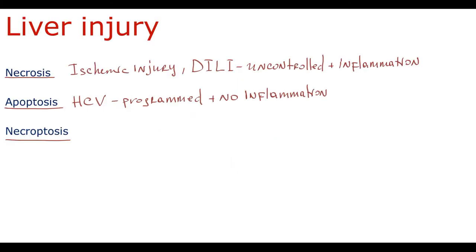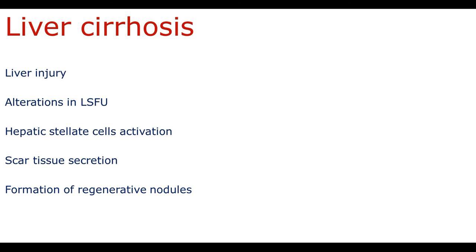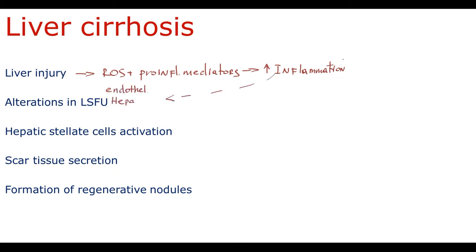Necroptosis is a relatively new term — basically it's a combination of necrosis and apoptosis. The similar feature with apoptosis is that it's a programmed process of cellular death. But unlike apoptosis, this process results in rupture of the plasma membrane with subsequent release of cellular content. So like necrosis, this process results in substantial inflammation. The principle is that direct damage to liver cells leads to release of reactive oxygen species and other pro-inflammatory mediators that cause activation of immune cells and thereby promote inflammation.